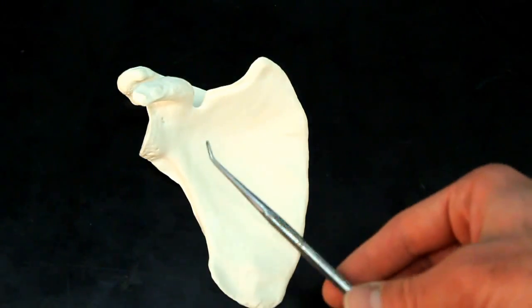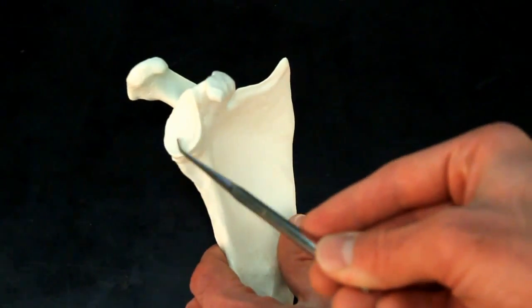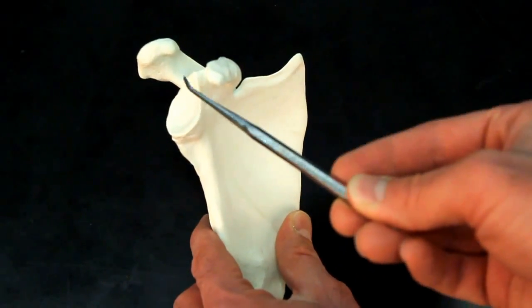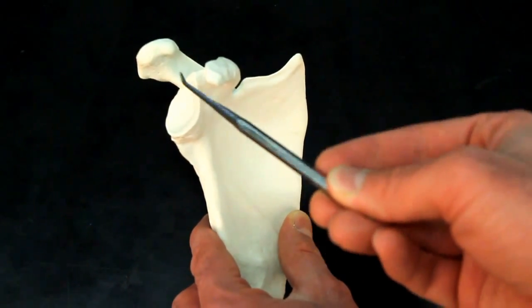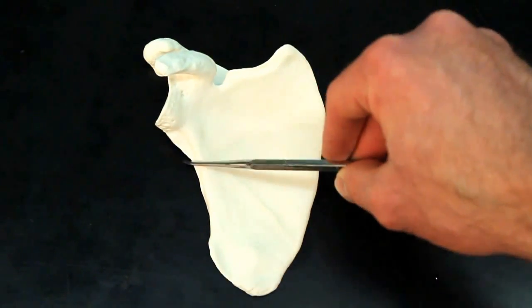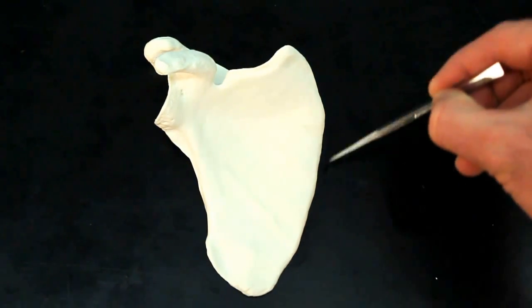Reason being, this landmark, the glenoid cavity, also known as the glenoid fossa, has to be pointing laterally away. That's where your shoulder joint is. So, lateral border, medial border.